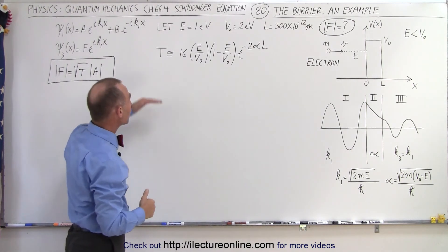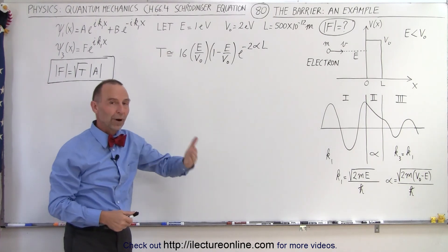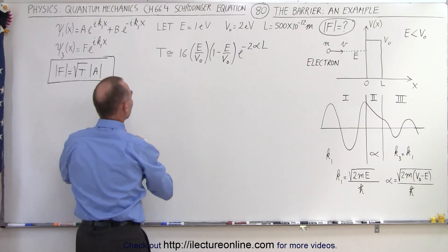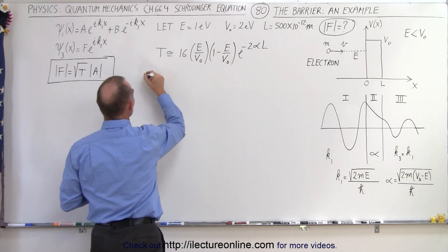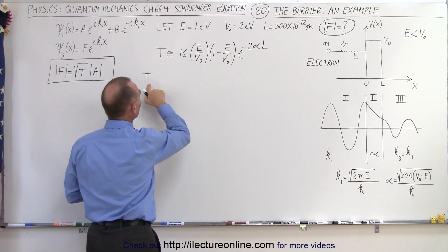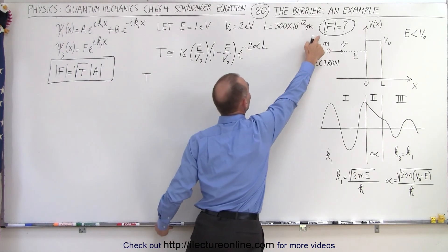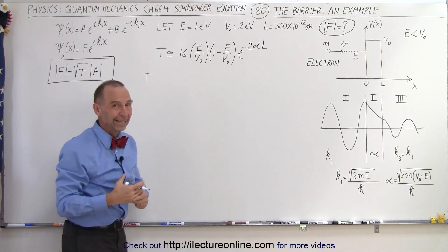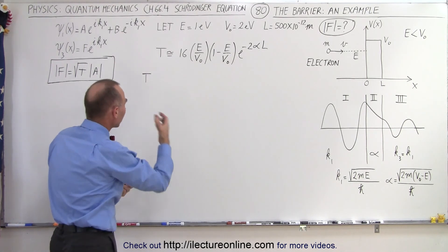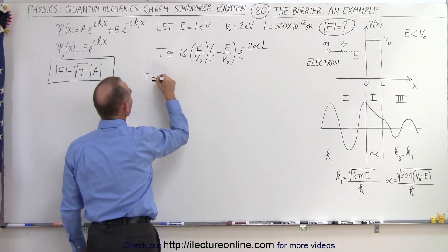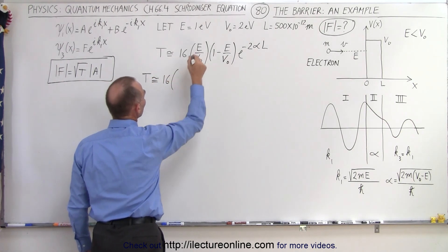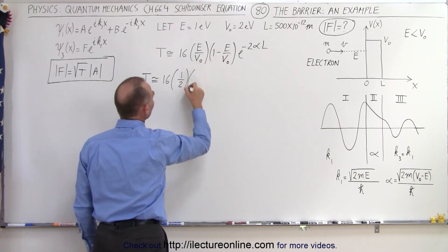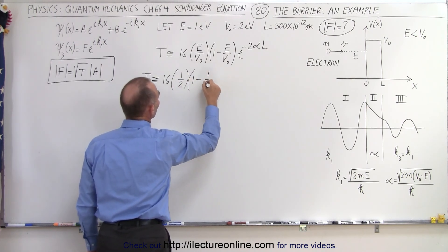Here's our simplified equation, the one we derived in the previous video. Let's plug in what we know. The transmission coefficient — which we need to find the amplitude on the other side of the barrier — is approximately equal to 16 times the ratio, which is 1 over 2 (one half), times 1 minus 1 over 2.